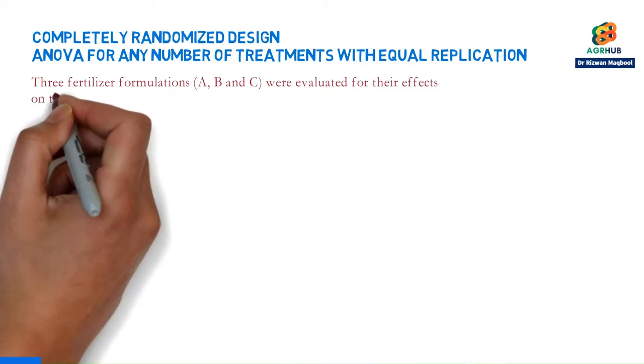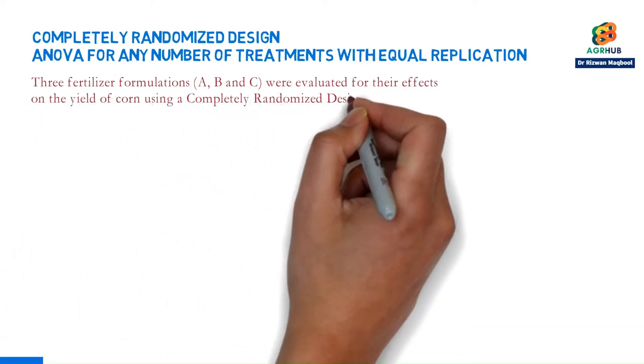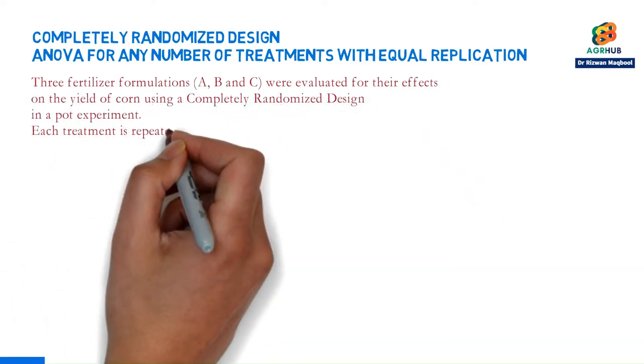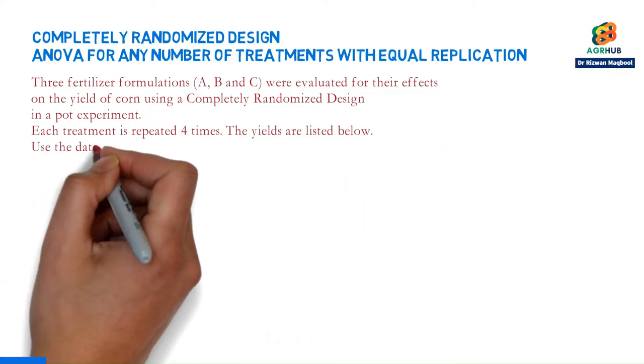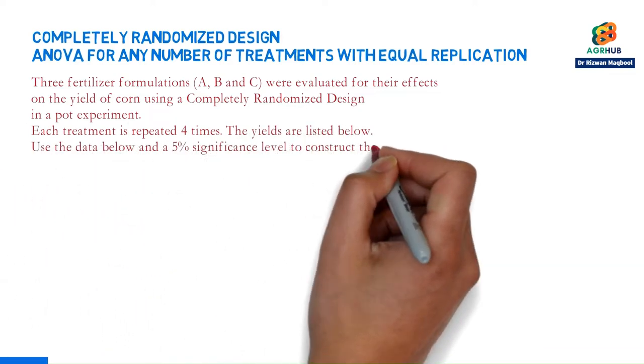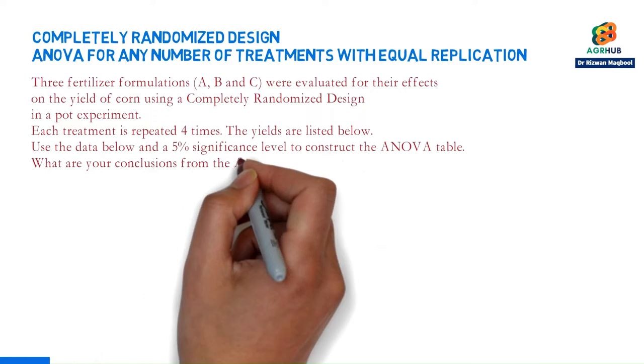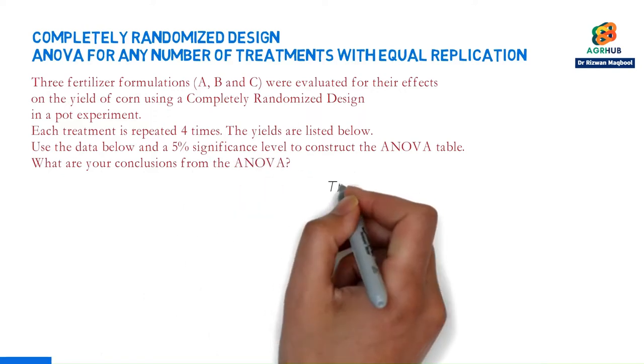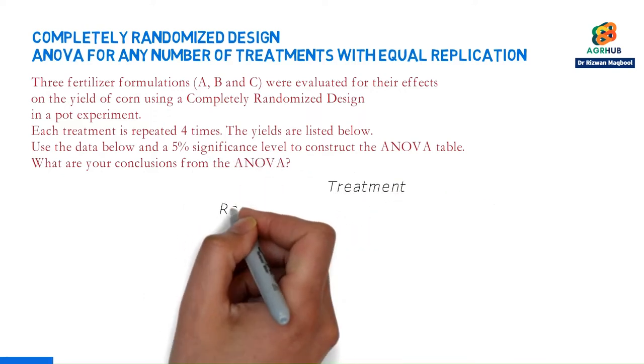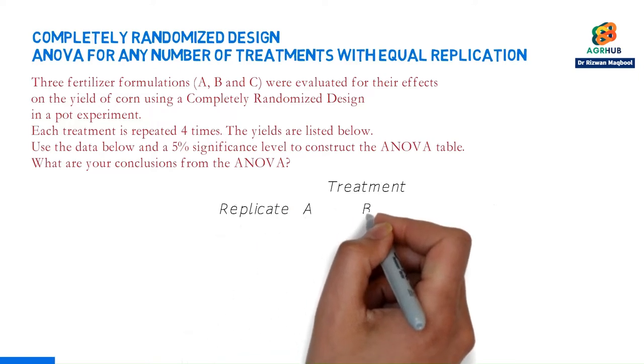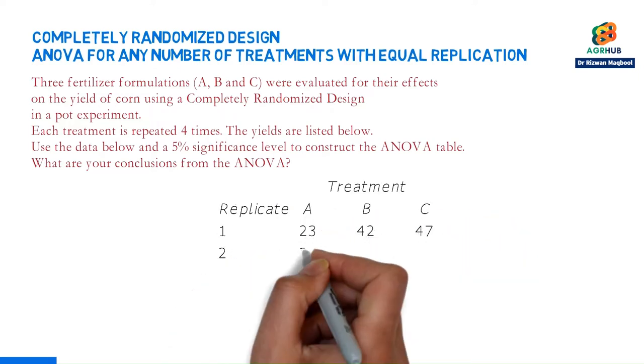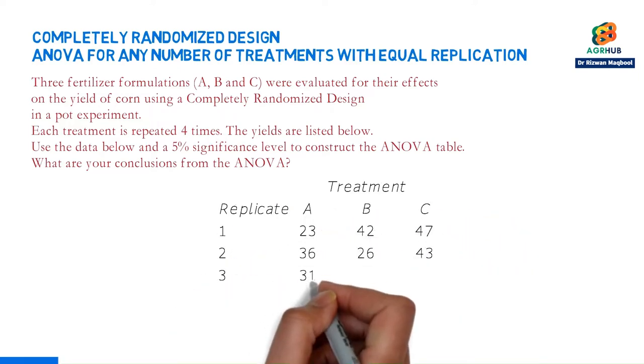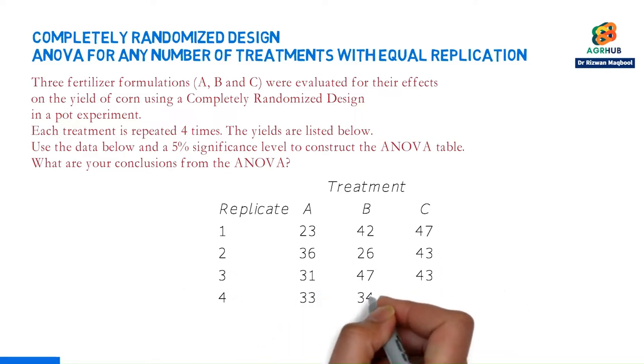A pot experiment was conducted using a completely randomized design to evaluate the effects of three fertilizer formulations A, B, and C on the yield of corn. Each treatment is repeated four times. The yields are listed below. Use the data below and a 5% significance level to construct the ANOVA table. What are your conclusions from the ANOVA?